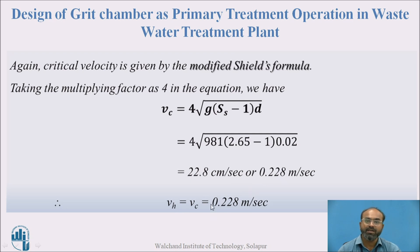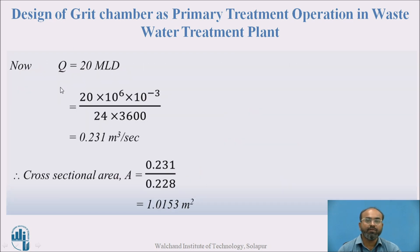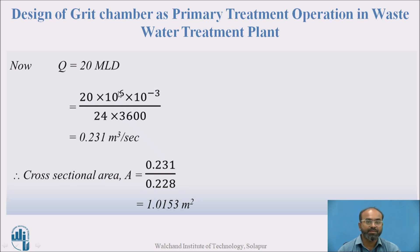Now I calculate the cross-sectional area. First, I convert the flow rate from MLD to m³/s: 20 MLD = 20 × 10⁶ × 10⁻³ ÷ (24 × 3600), giving approximately 0.231 m³/s.